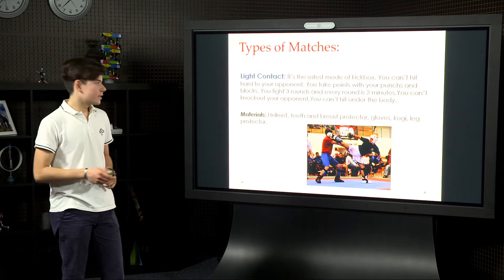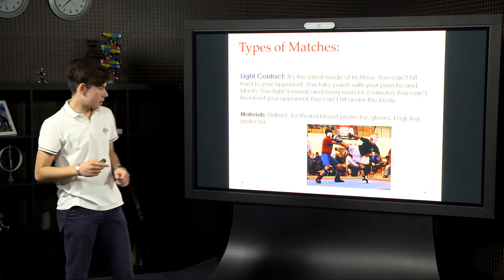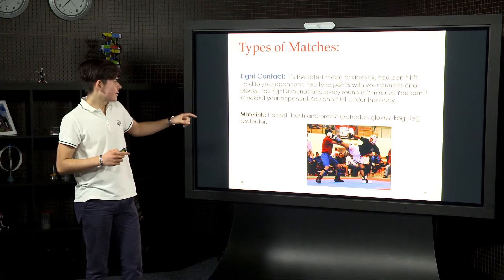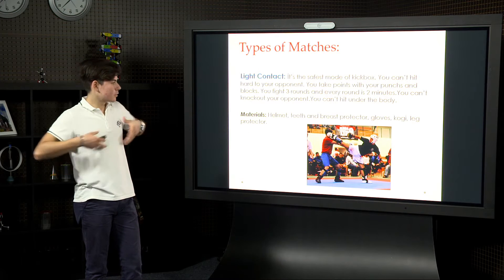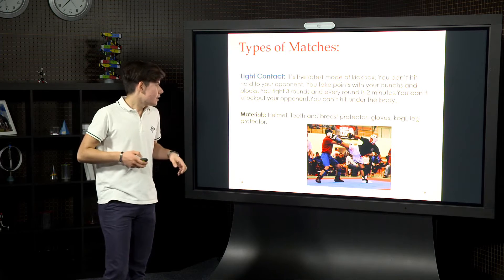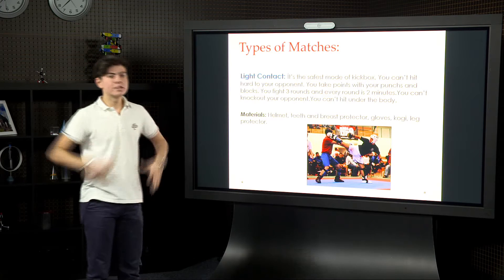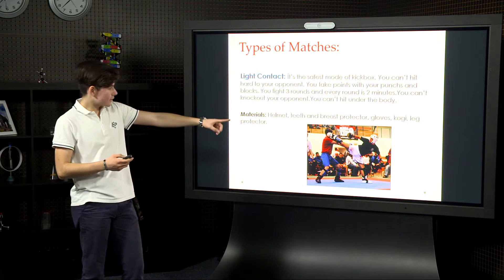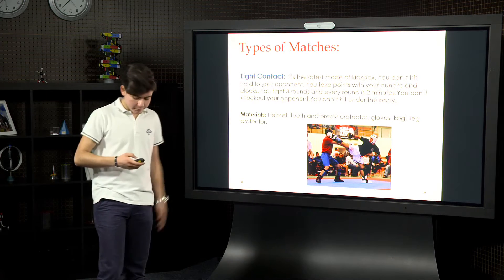You need some materials to do this light contact. You can see on the picture. It's helmet, teeth and breast protector for women, and gloves, cookie, and leg protector. The cookie is to protect this part of your body.